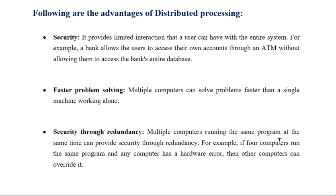If we have multiple computers in the network, we will have distributed processing. If we have hardware failures in some device, other computers will override it because another node or channel is available, and the failure will not affect the overall system. This is the third advantage: security through redundancy.